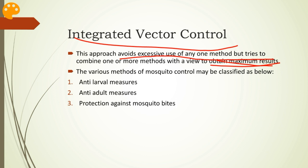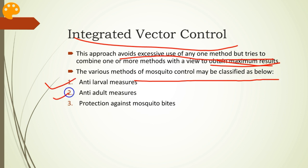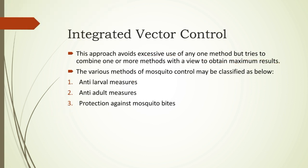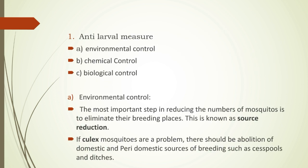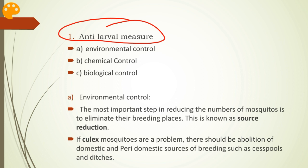The various methods of mosquito control are classified as: anti-larval measures, anti-adult measures, and protection against mosquito bites. Anti-larval measures consist of environmental control, chemical control, and biological control.